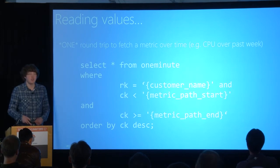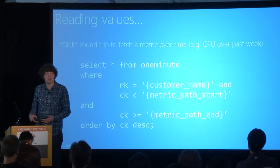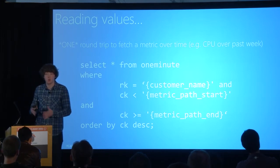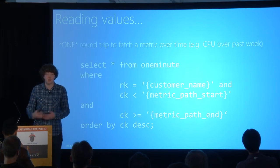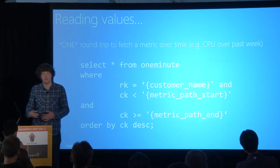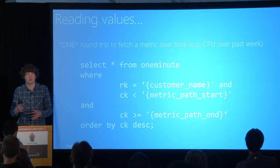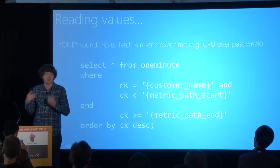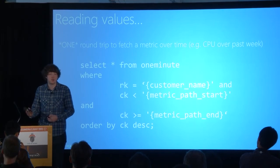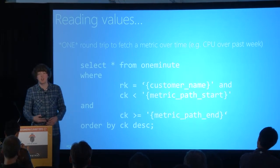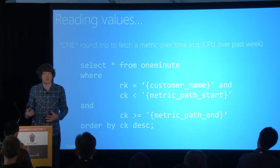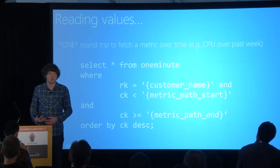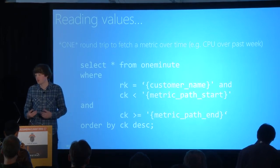When we want to read these values back, we're able to make a single round trip to the database. Our primary scenario is we want to look at a metric and its metadata over a period of time — a week, a month, or 24 hours — so that our customers can quickly fetch this data with one round trip: seek, scan, return. This is highly performant and basically allows us to serve this huge number of writes every day and then a huge number of reads, because we have thousands of customers logged into our dashboard updating in real time every 60 seconds.